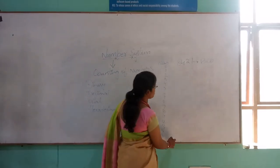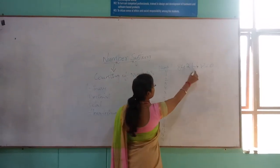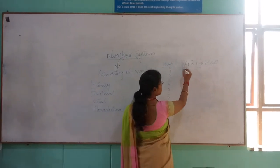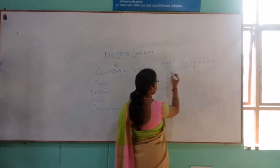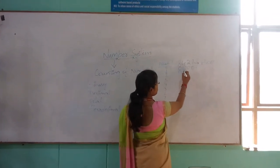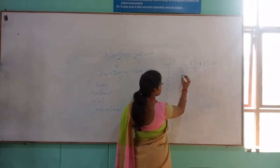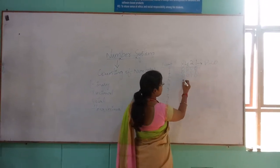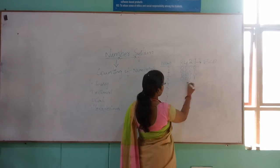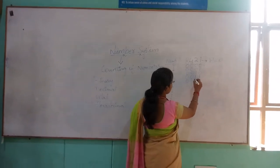We are converting these numbers into BCD format. For 0, we are converting 0, 0, 0, 0 — all will be 0. For 1, it will be 0, 0, 0, 1. For 2: 0, 0, 1, 0. For 3: 0, 0, 1, 1. For 4: 0, 1, 0, 0.